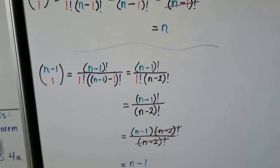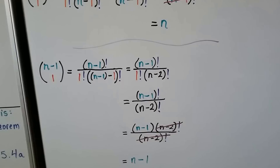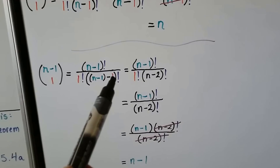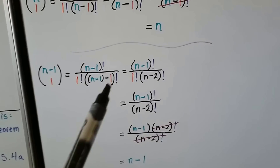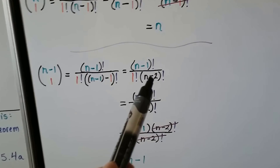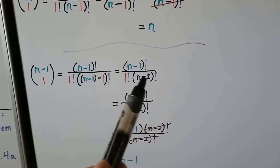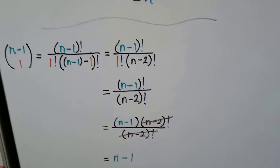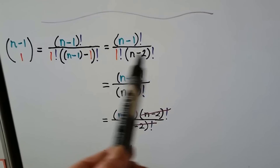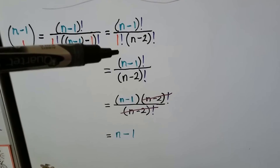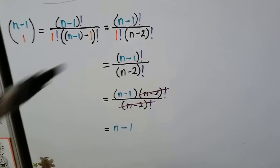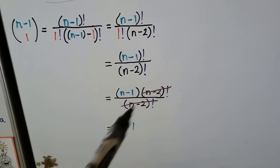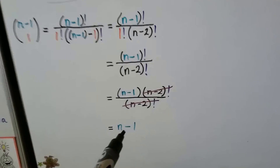Now for n minus 1 choose 1: we have n minus 1 factorial over 1 factorial times n minus 1 minus 1 factorial. Since negative 1 minus 1 is negative 2, that gives n minus 2 factorial. So we have n minus 1 factorial over 1 factorial times n minus 2 factorial — multiplying by 1, so it's n minus 1 factorial over n minus 2 factorial. We write n minus 1 factorial with a factor of n minus 2 factorial, cancel them out, and we're left with n minus 1.